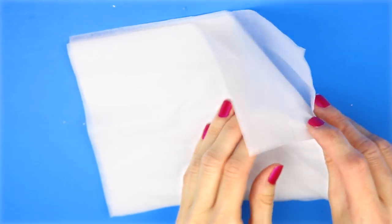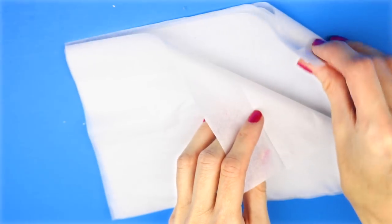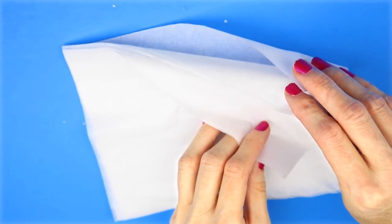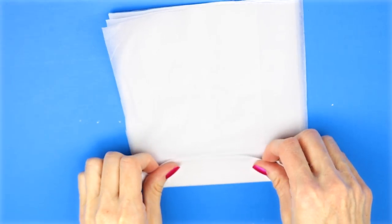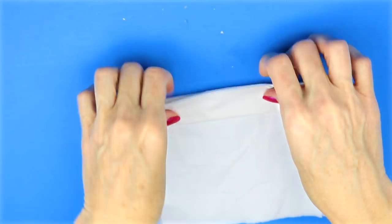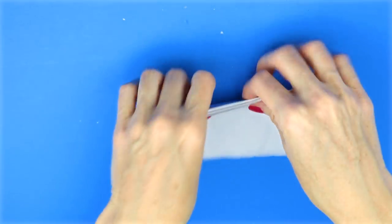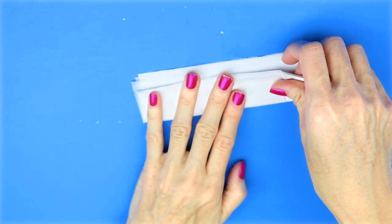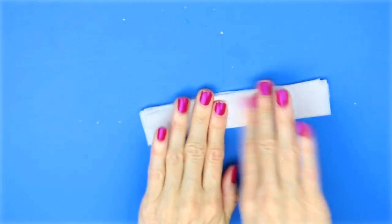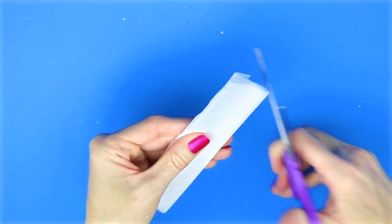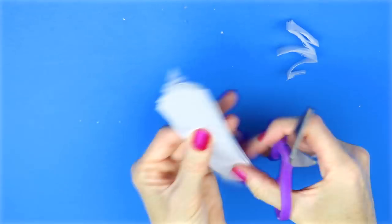For this one, I cut out five sheets of tissue paper in eight by six inches. I faced the shorter side towards me and then started folding it in an accordion fold. I rounded out both of the ends.